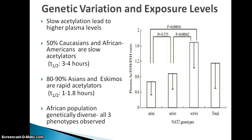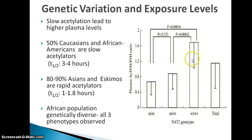Genetic variation does influence exposure levels. As shown in this diagram, the NAT2 genotypes are on the horizontal axis and the ratio of plasma isoniazid to its metabolite is shown on the vertical axis. Slow acetylators with the mutant genotype have a lower ratio compared to intermediate and wild-type genotypes. 50% of Caucasians and African-Americans are slow acetylators and therefore accumulate isoniazid, leading to toxicity. 80 to 90% of Asians are rapid acetylators with an elimination half-life of 1 to 1.8 hours.